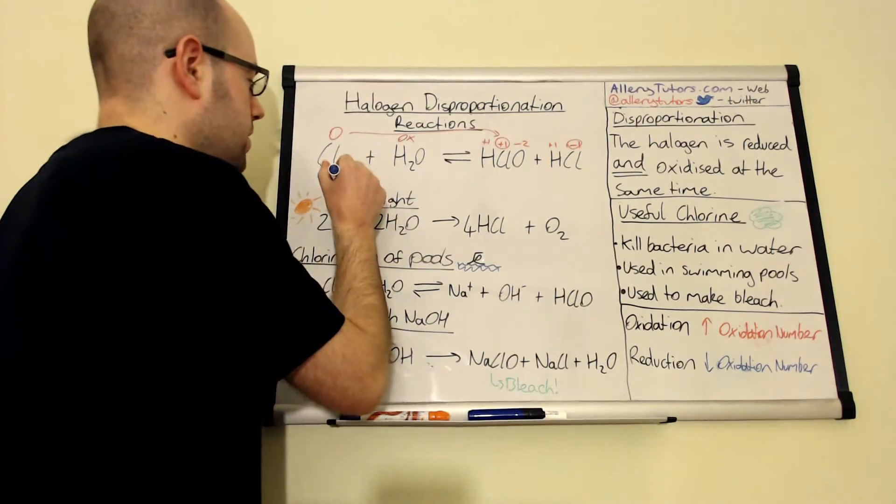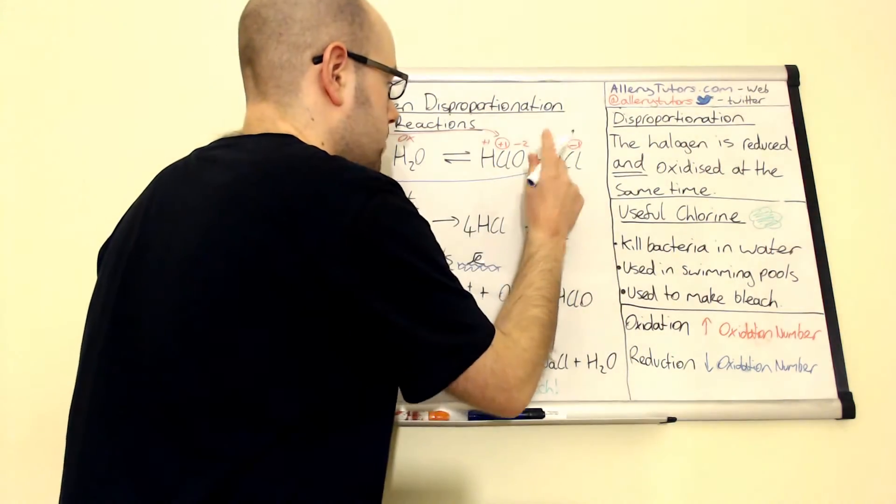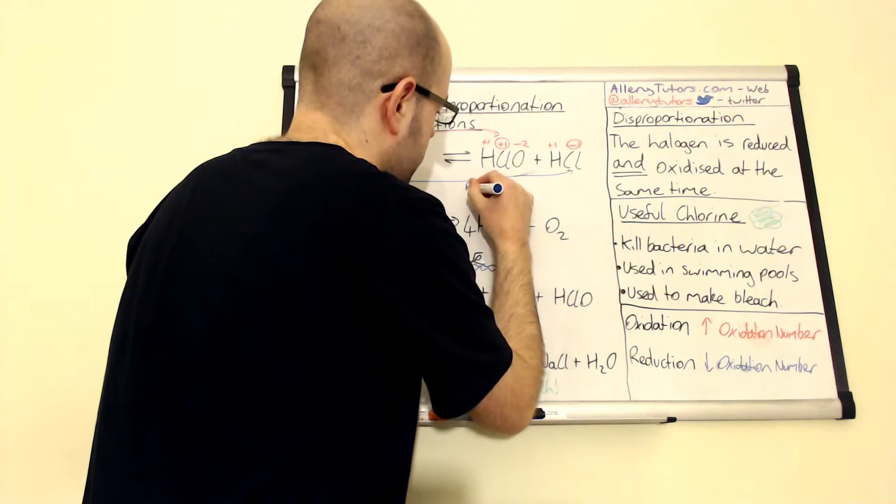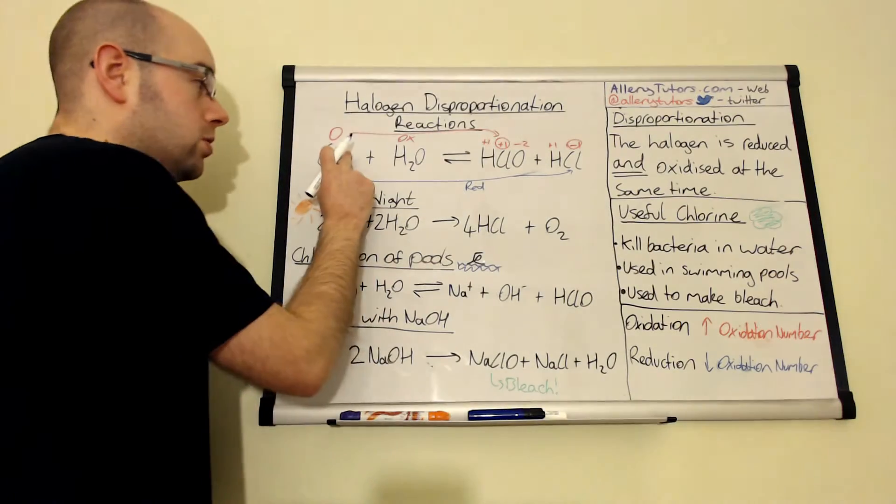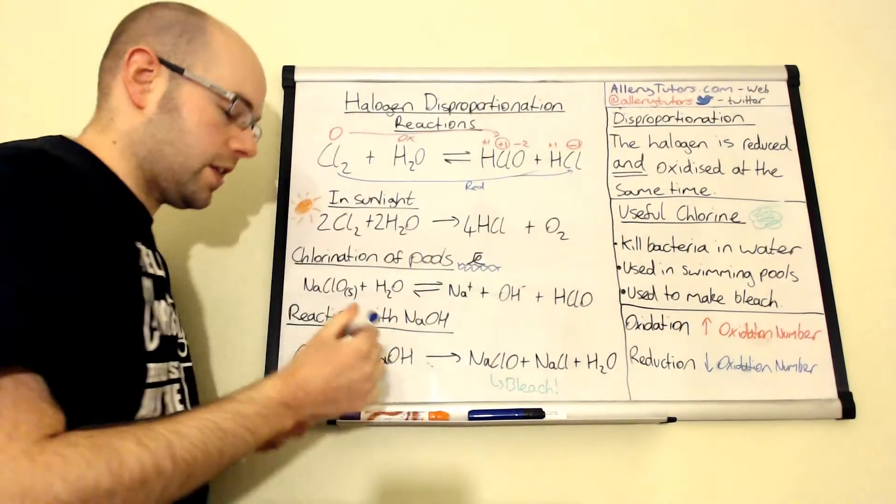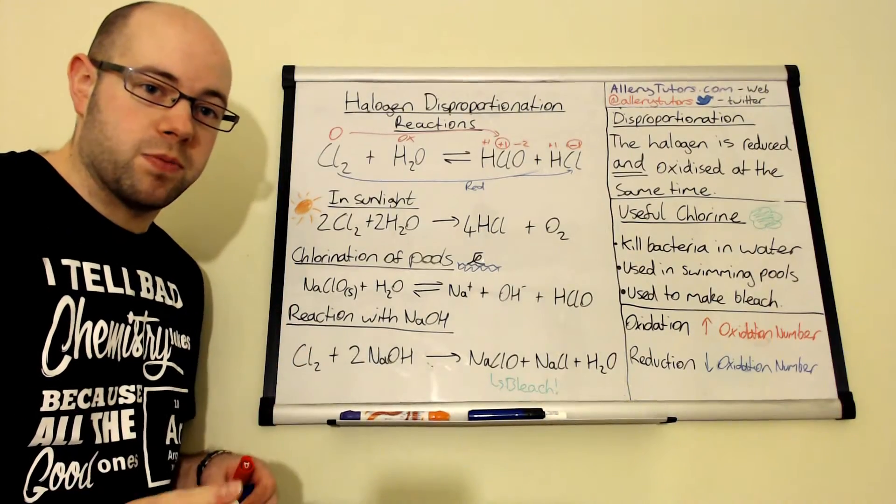So the chlorine has been reduced, but it's the same chlorine, this one here, that has been oxidized and reduced at the same time. We call that a disproportionation reaction.